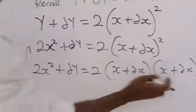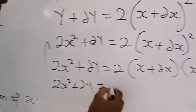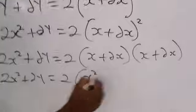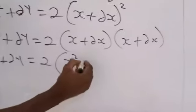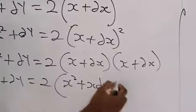Therefore, open this bracket. What we will now have is 2X squared plus change in Y equal to 2 open bracket X times X is X squared. X times change in X is X change in X. Plus times plus is plus.